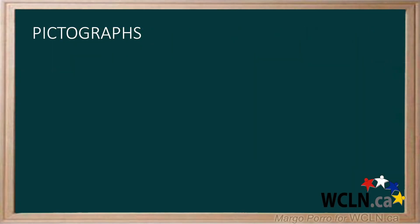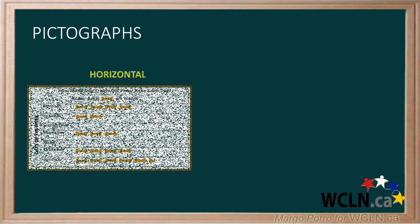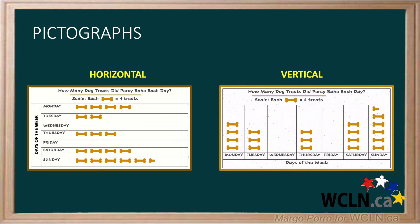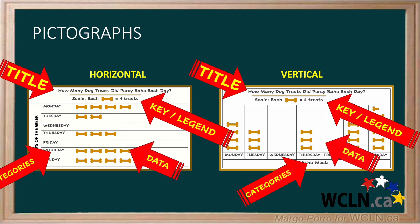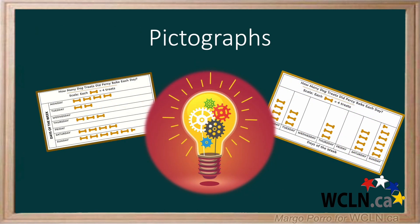In summary, pictographs can be horizontal or vertical. Either way they're drawn, they will have a title, categories, a key or legend, and the data. Now you understand what a pictograph is, what labels are required, and how to read them. Thank you for watching.